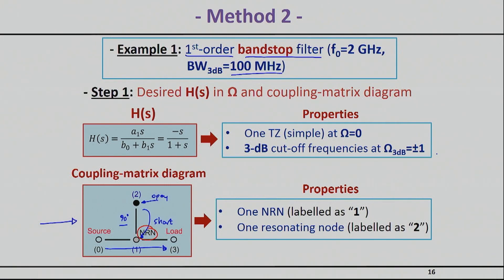It's a very intuitive idea — just by knowing the filter specifications, you can draw the coupling diagram. The specific transfer function we synthesize has a single transmission zero at omega equal to zero, which when scaled through the bandpass transformation will be placed at the resonant frequency of 2 GHz. We assume a 3 dB bandwidth with the 3 dB points at plus or minus one in the normalized domain, corresponding to a bandwidth of 100 MHz.